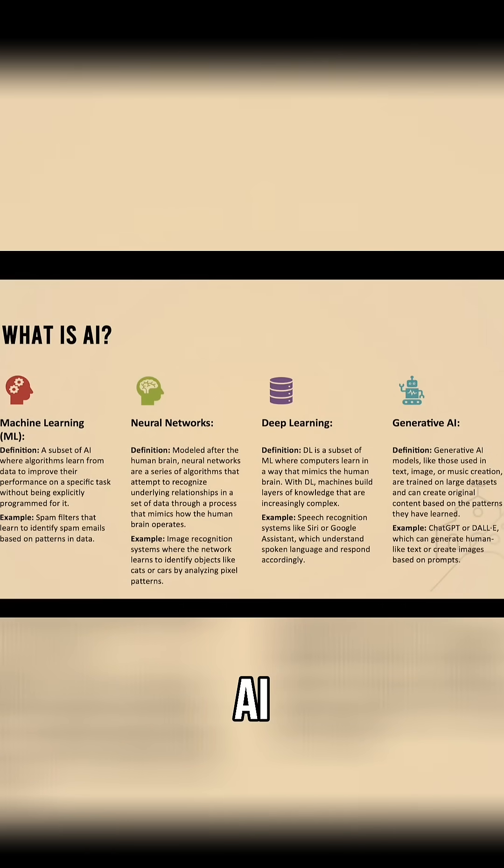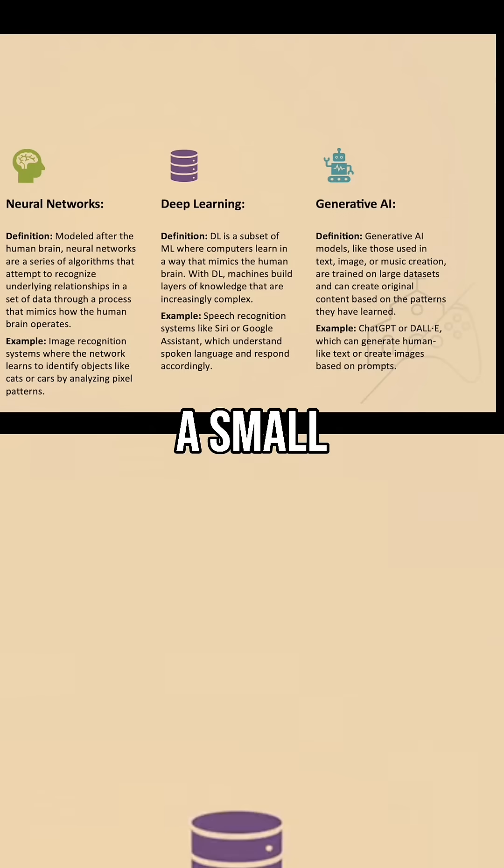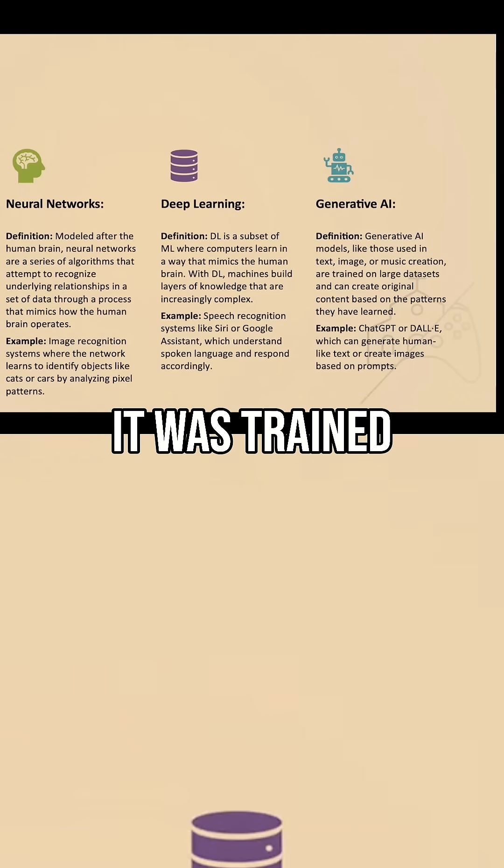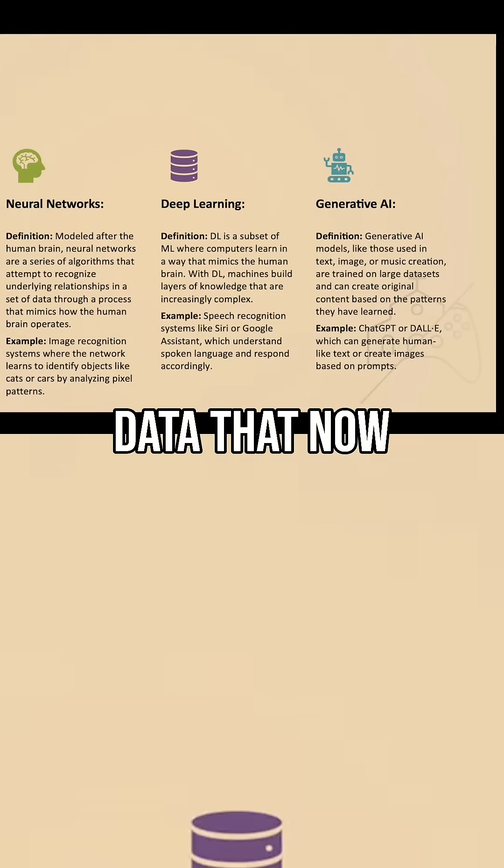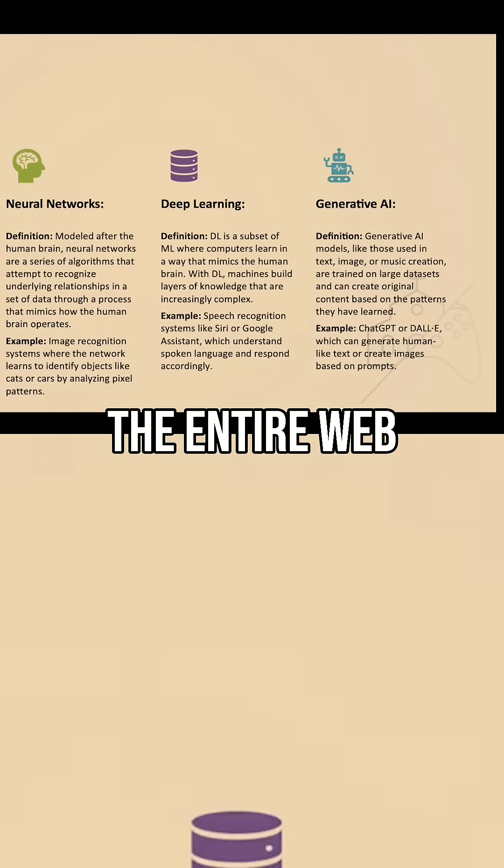And then we get to generative AI. Generative AI is what we get now, a small subset where we get something that can generate something new. ChatGPT simply means generative pre-training transformer. It was trained on a particular set of data that now has a chance to access the entire web.